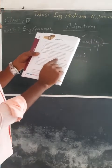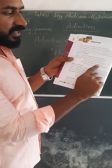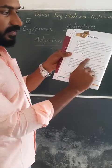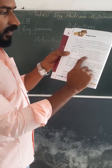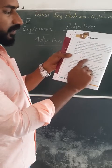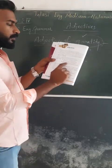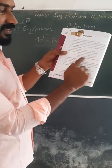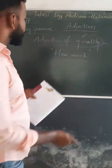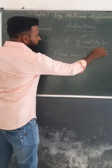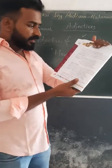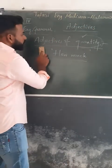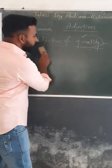'I have enough money in my pocket.' 'Enough' is the adjective of quantity — it indicates quantity but not exactly. We have enough money but we don't know how much exactly. So 'much' and 'enough' are examples of adjectives of quantity. They answer the question 'how much.'